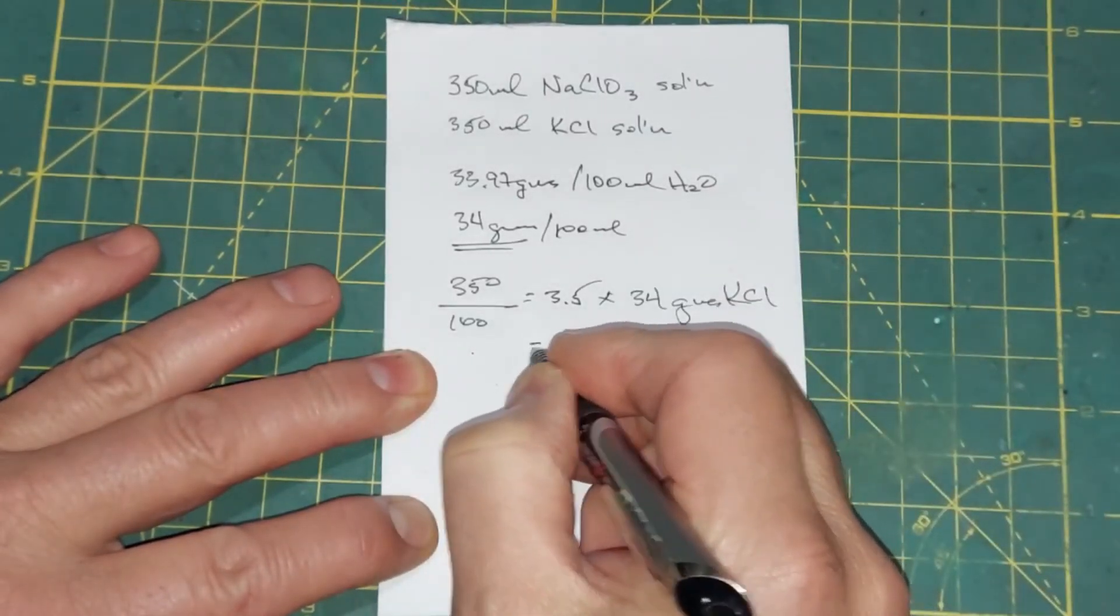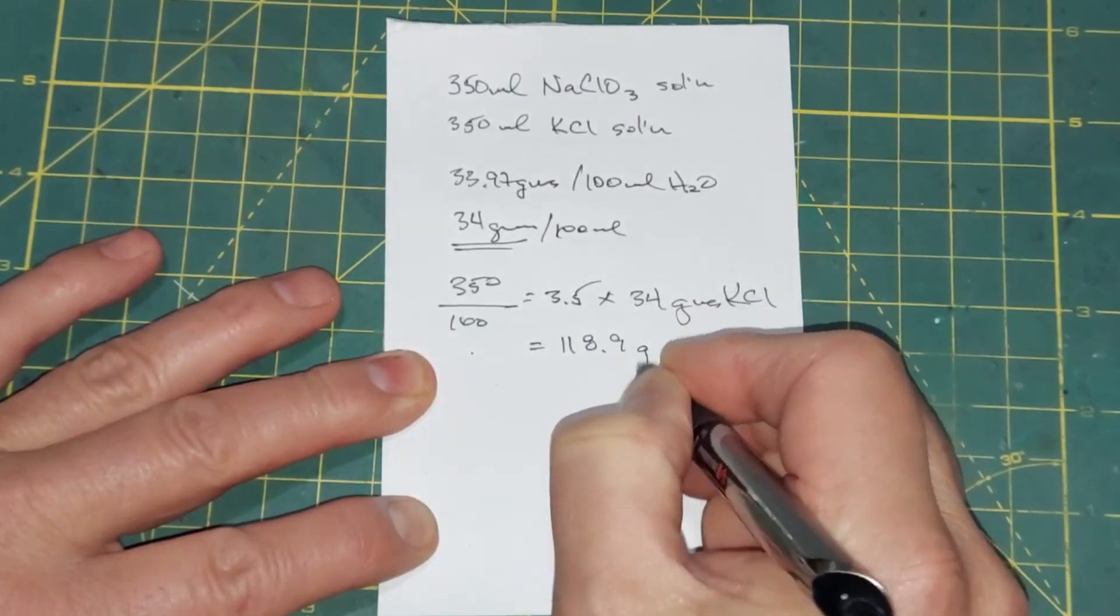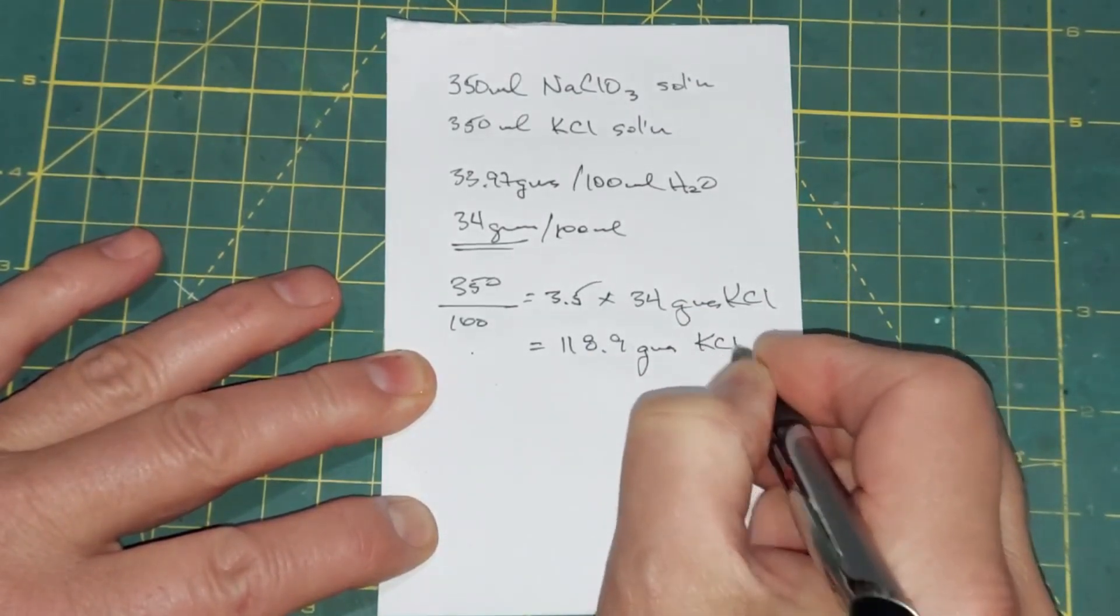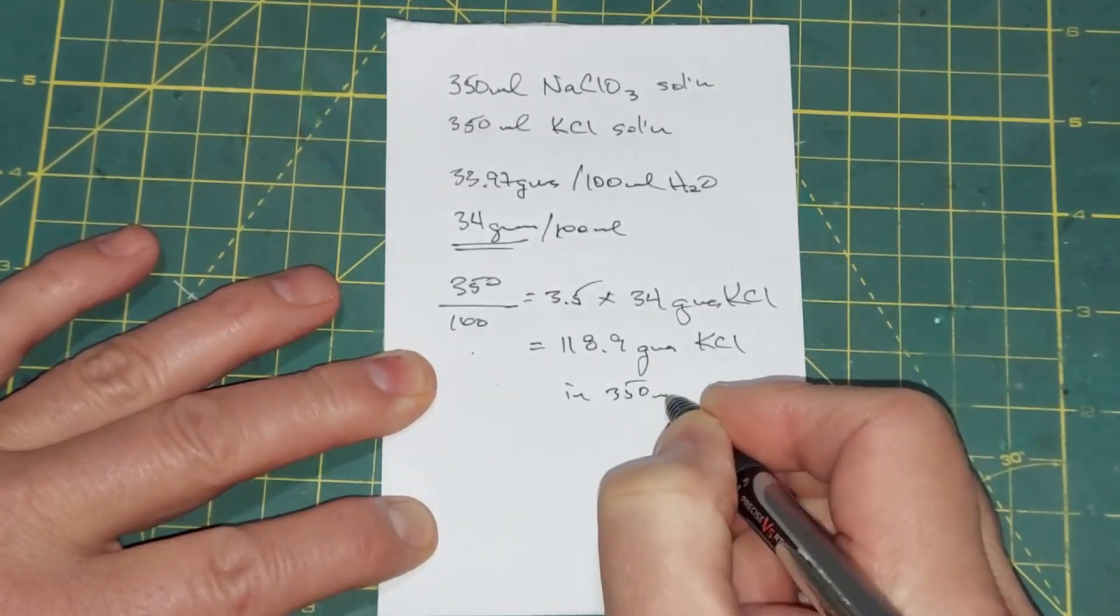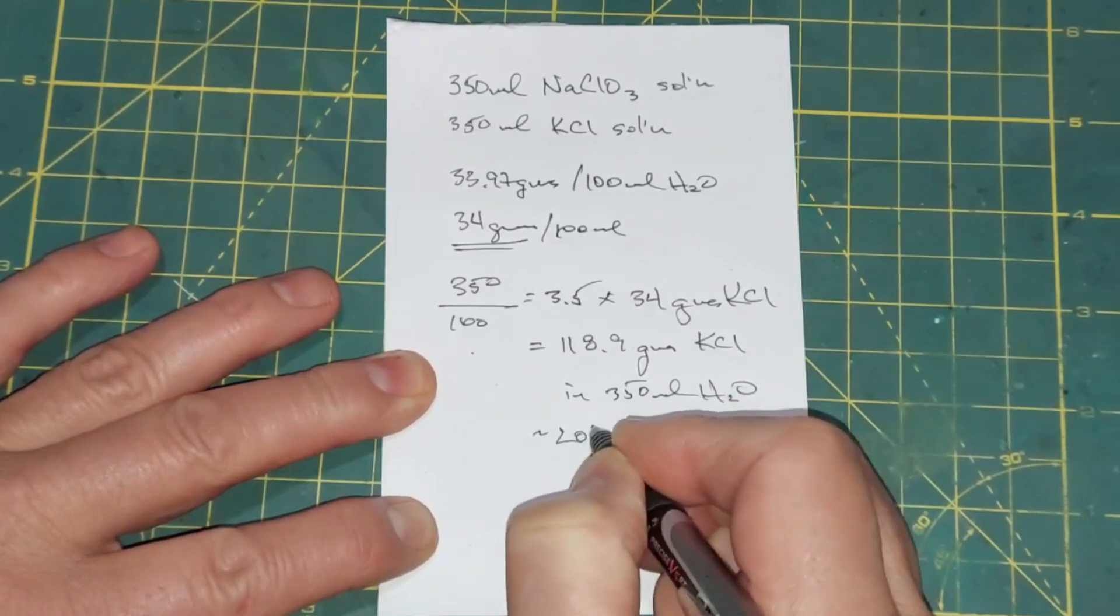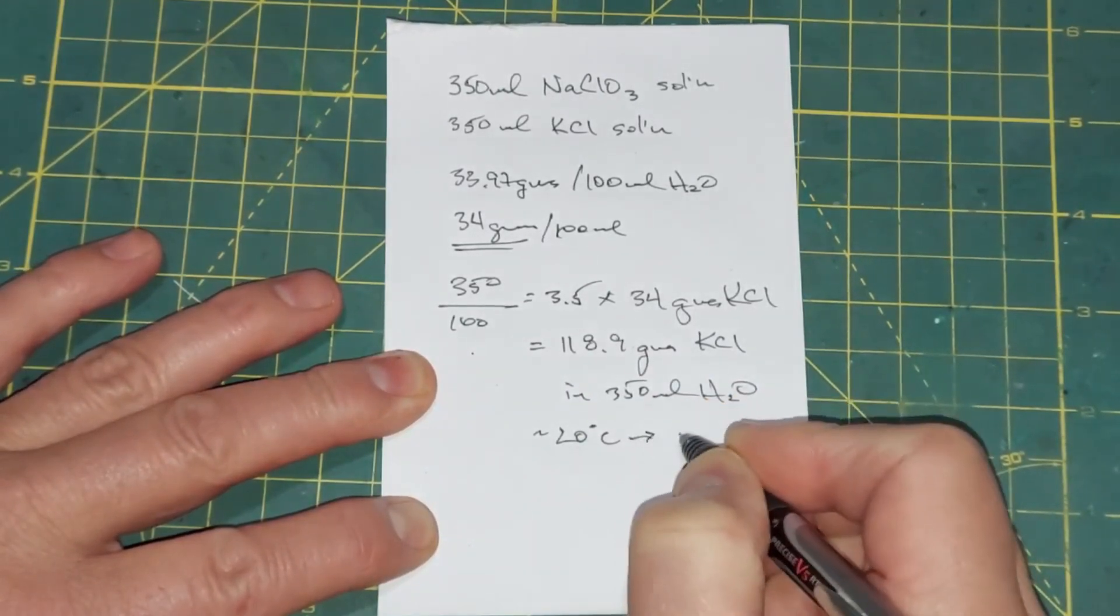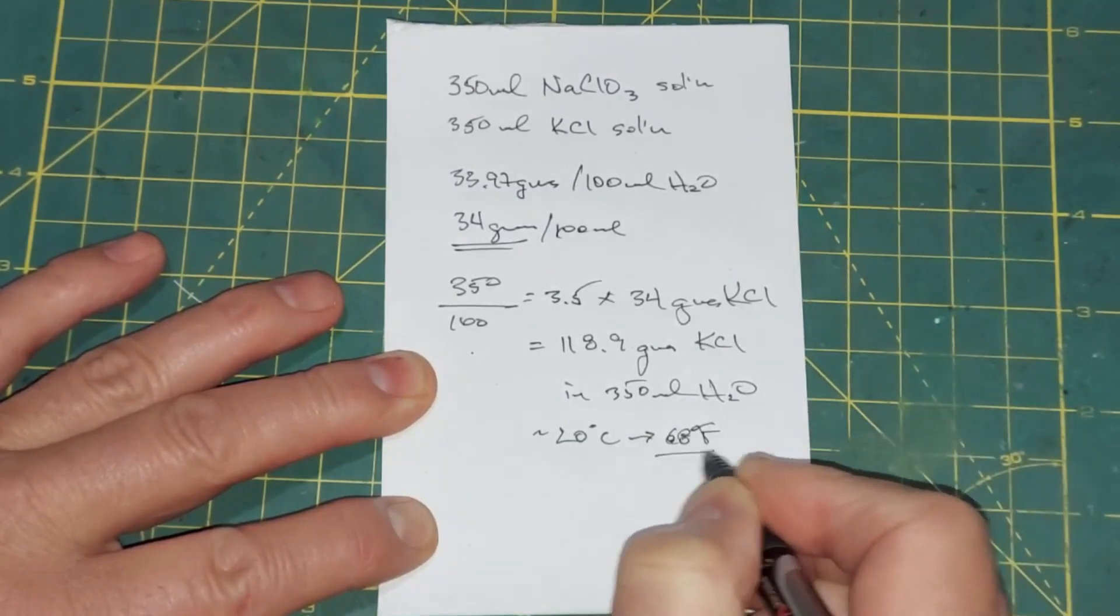And that leads us to a total of 118.9 grams of KCl, and that'll be in 350 milliliters of water. And this is at 20 degrees celsius, which is 68 degrees fahrenheit. And so that's the temperature of the water I'll be using.